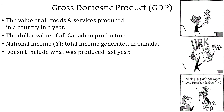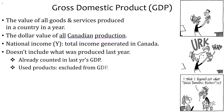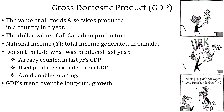GDP does not include what was produced last year. Old stuff is not included in GDP because it was already included in last year's GDP. So used products and secondhand items are excluded from GDP because you want to avoid double counting — you don't want to double dip.